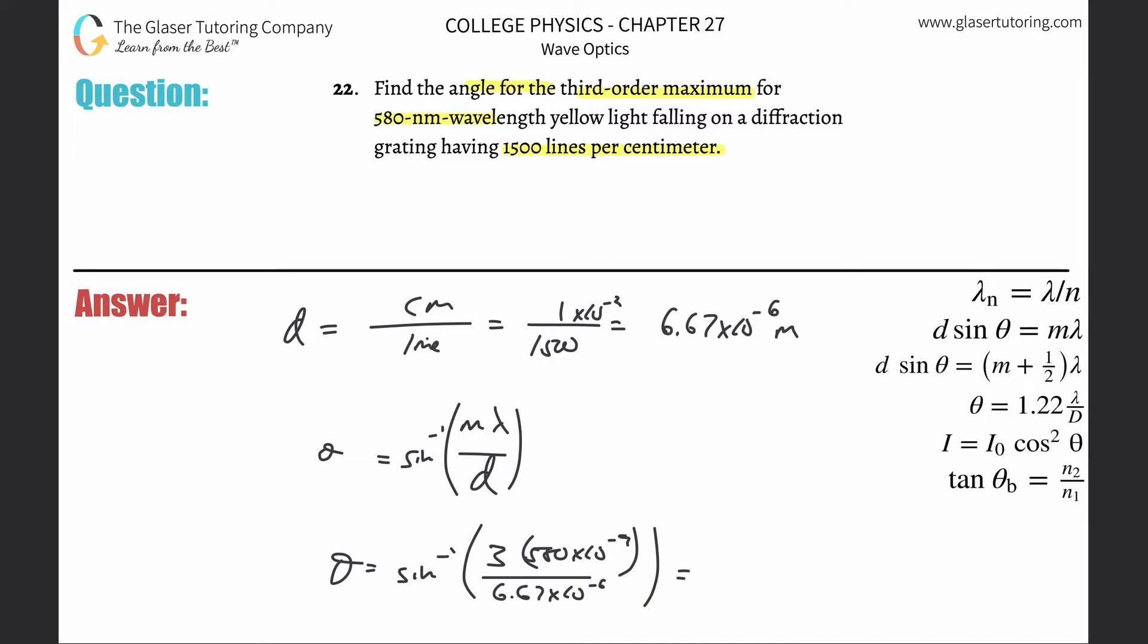So let's do inverse sine of 3 times 580 times 10 to the minus 9th divided by that answer times 10 to the minus 6. And then this works out to be 15.1 degrees.